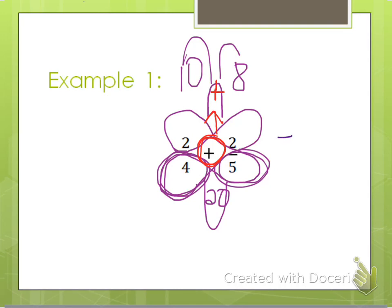So ten plus eight is eighteen, and that becomes the numerator of my fraction here. And then the twenty we got in the bottom part of this butterfly here, that's going to be my denominator. And so eighteen-twentieths is the answer to two-fourths plus two-fifths, and I did so using the butterfly method.